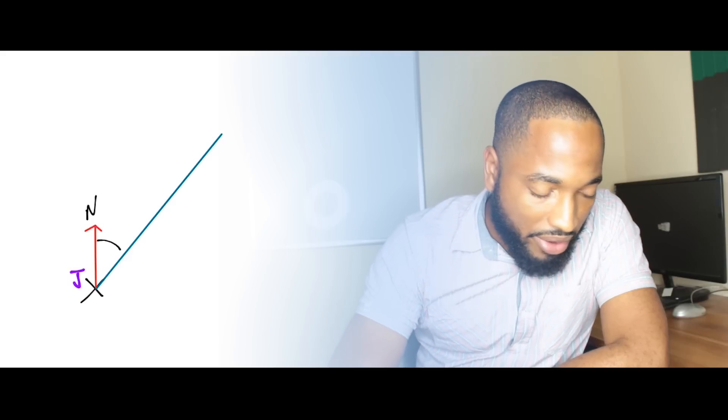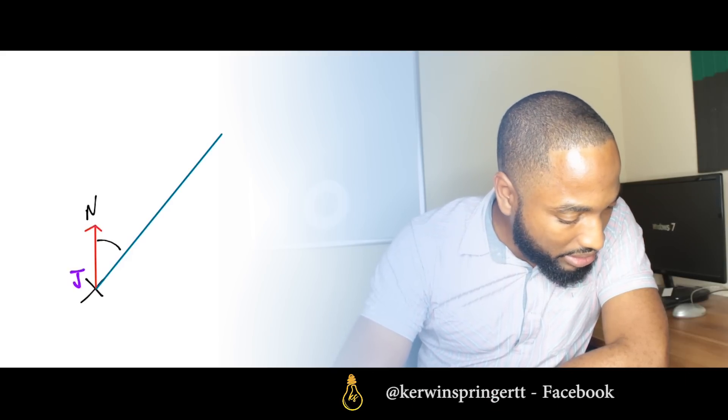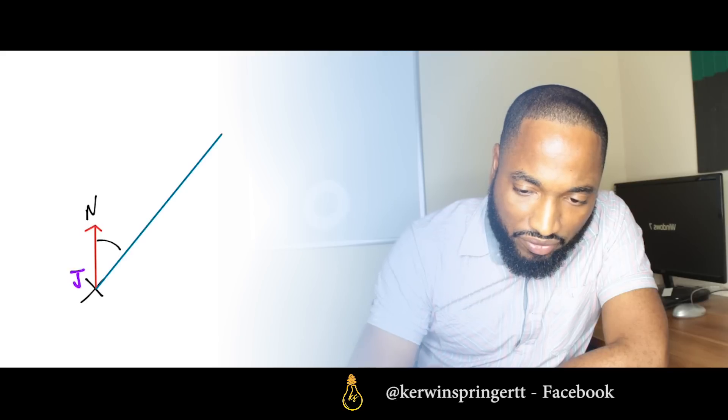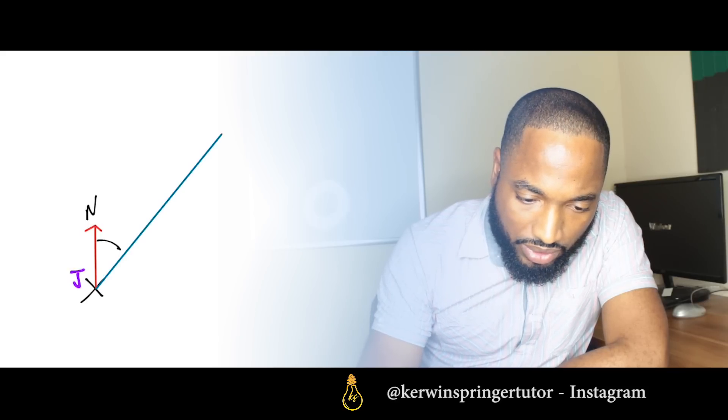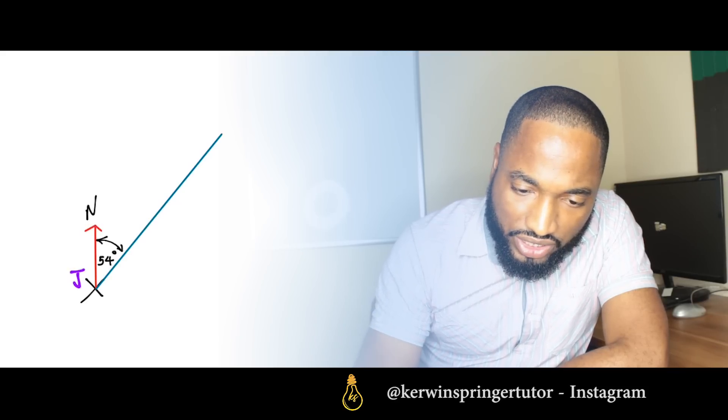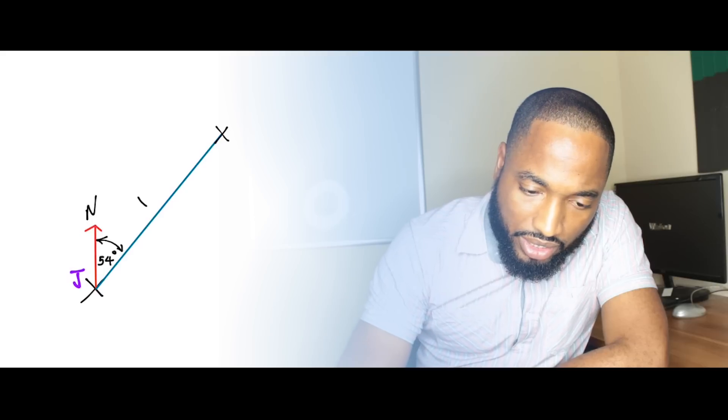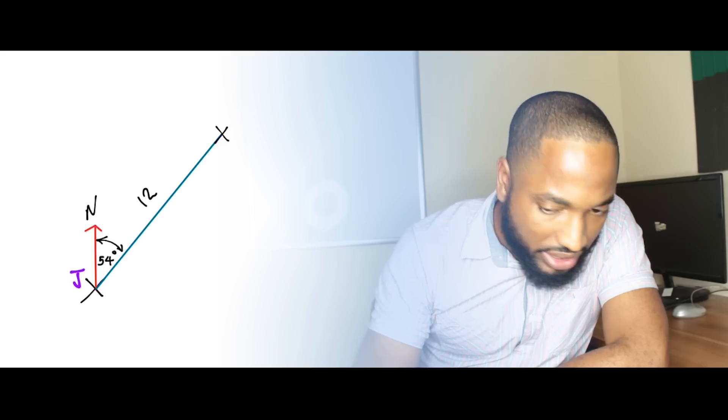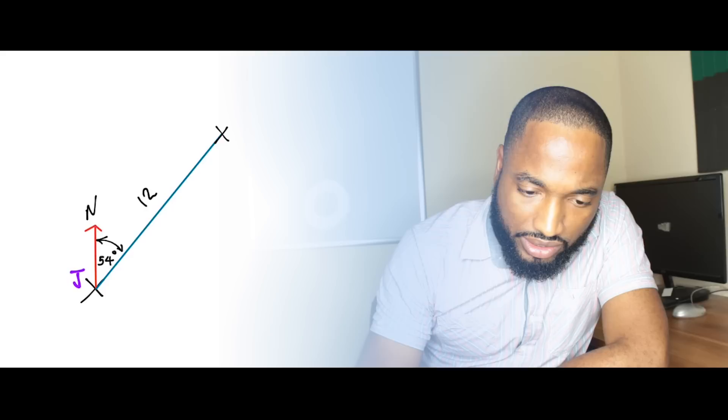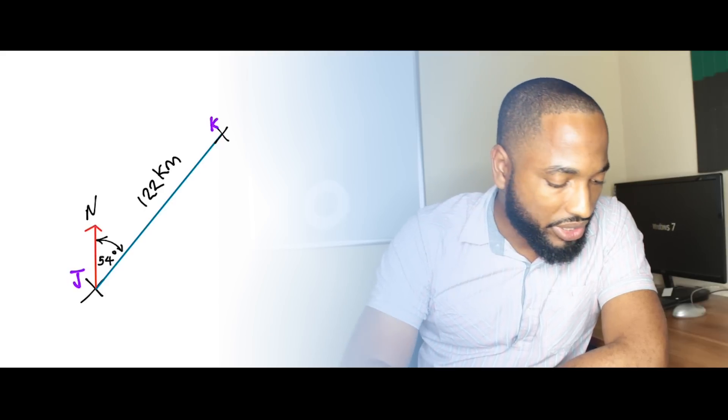Next up, we're going to put the bearing because we're aiming at point K now, and that's a bearing of 54 degrees. So 54 degrees is our point K, and it's at 122 kilometers. So you put in point K there.